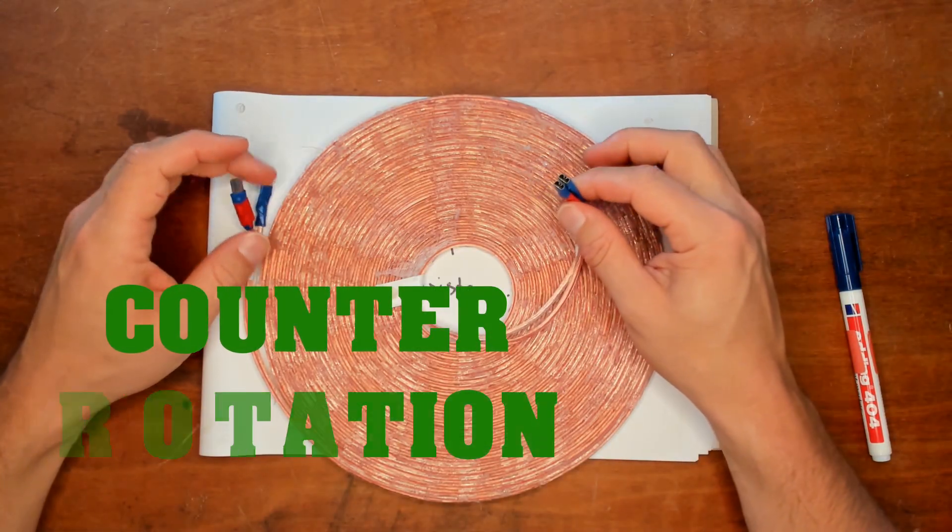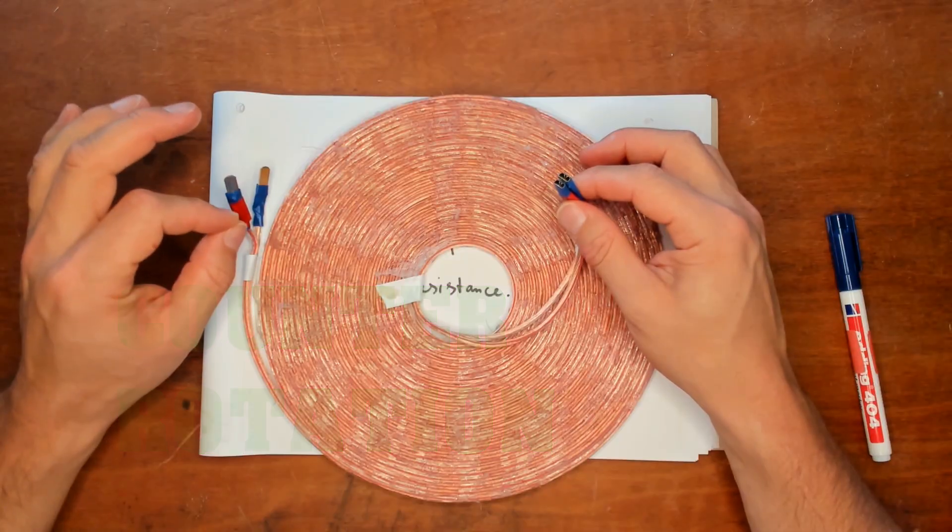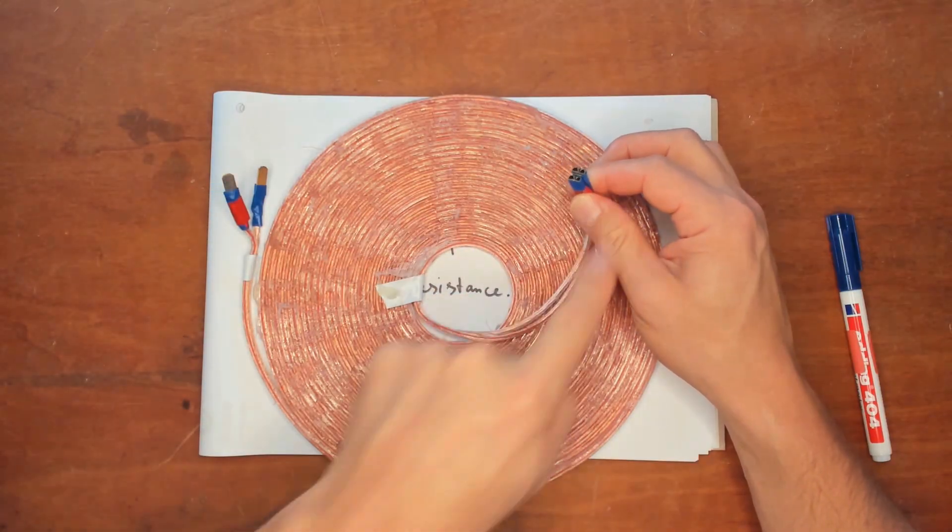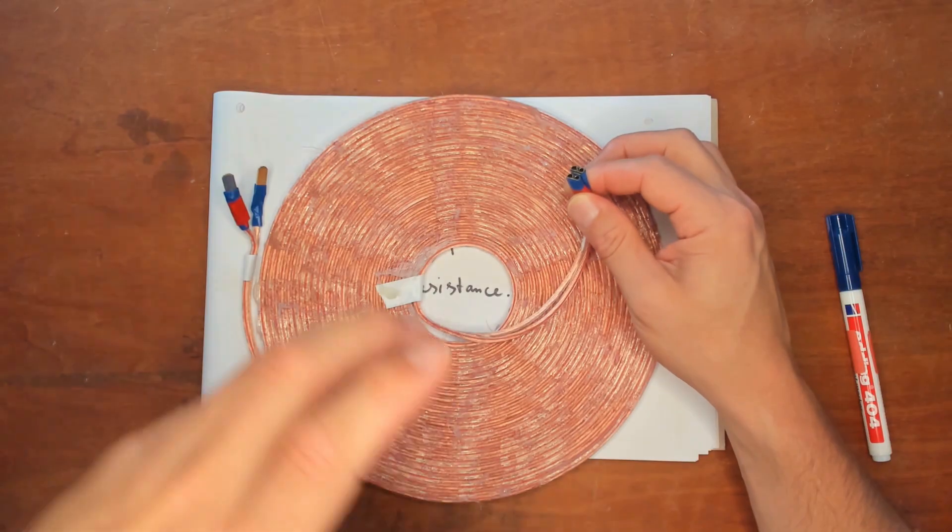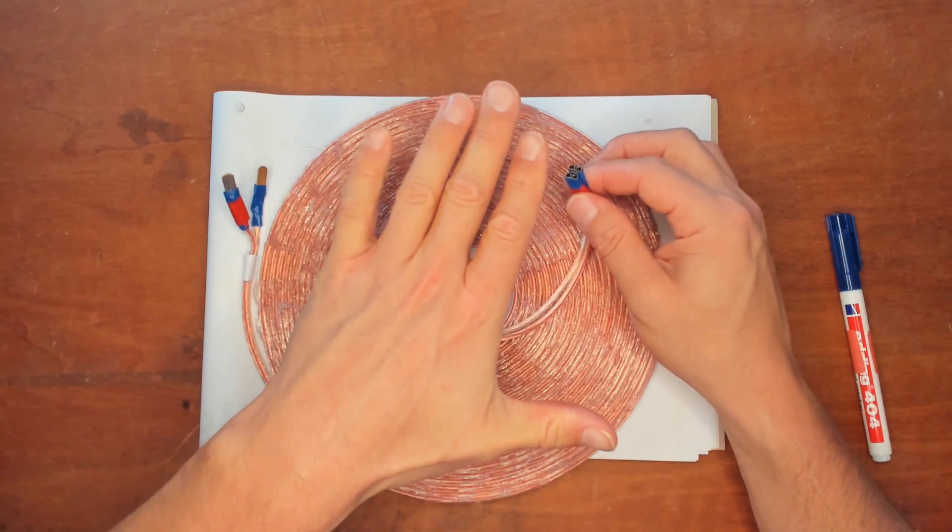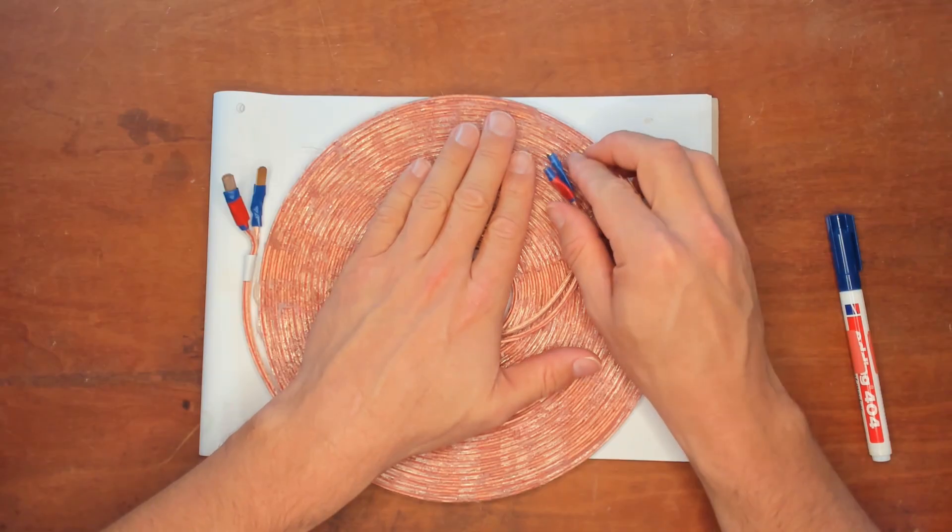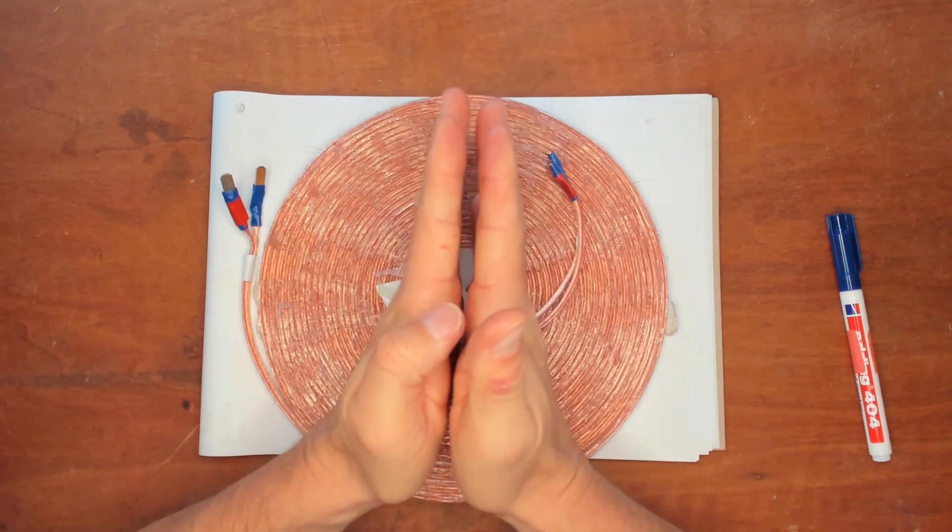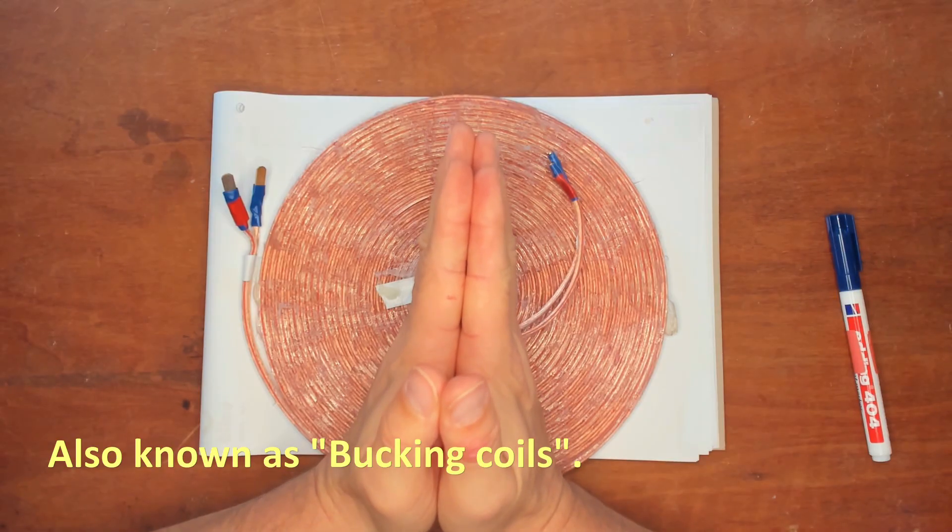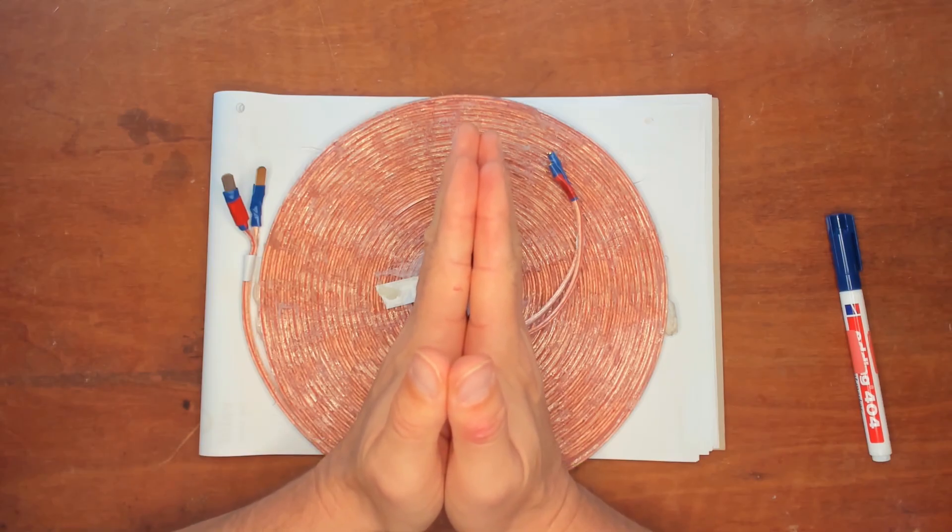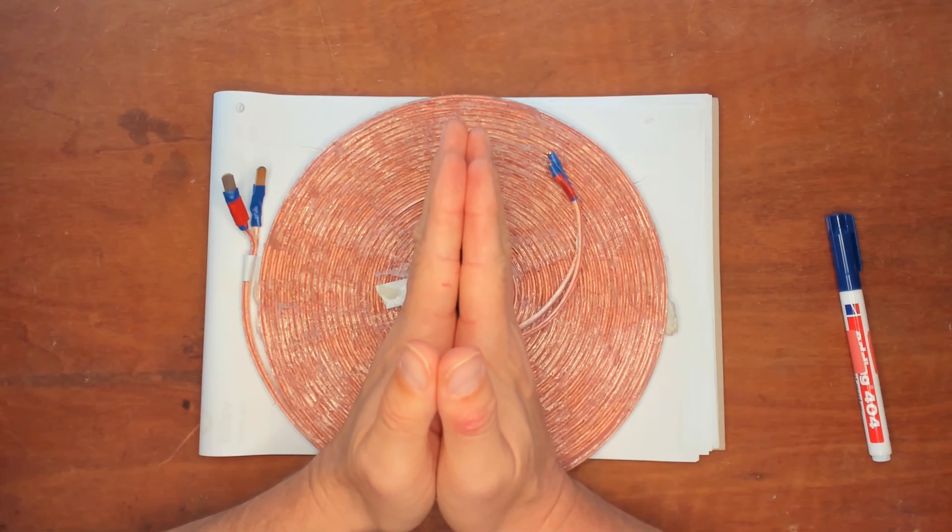We now have a coil that has counter rotation in it. The first winding will go counter clockwise and the second winding through the series connection will go the opposite direction clockwise. What this does is create a magnetic field in the first winding that is opposite to the magnetic field in the second winding. So now we have a coil with opposing magnetic fields. And this is something that nature doesn't like and wants to get rid of. And how it gets rid of this twisted energy field is by pushing the energy out in the form of a very strong impulse.